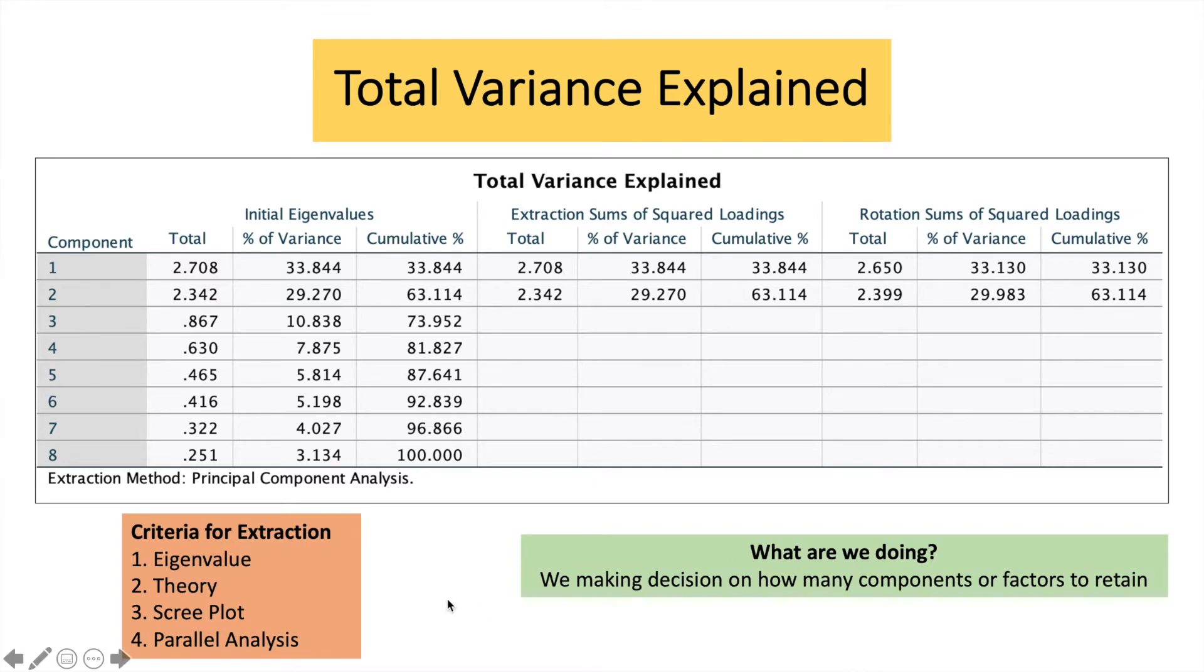We have several criteria for extraction. We can go through the eigenvalue. We can use a theoretical perspective to justify our items or components, how many factors to retain. We can use the Scree Plot, and we can also use the Parallel Analysis. There are many other methods as well, but we'll be focusing on these four here.